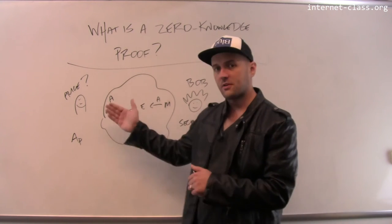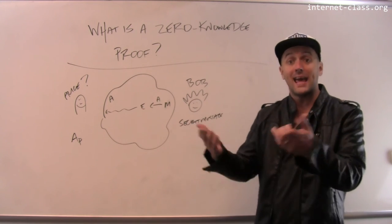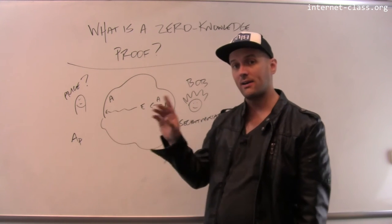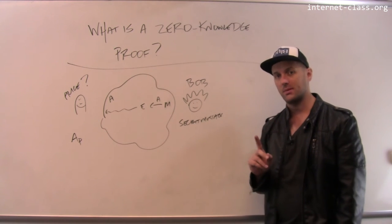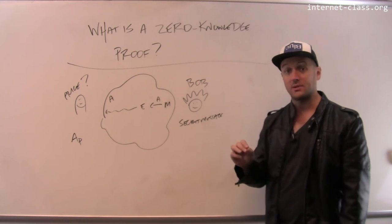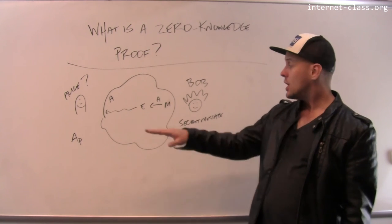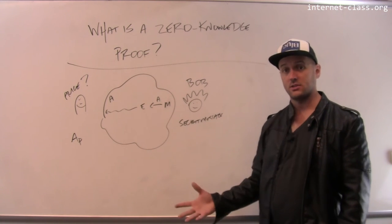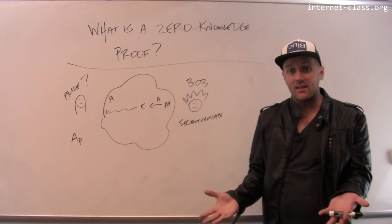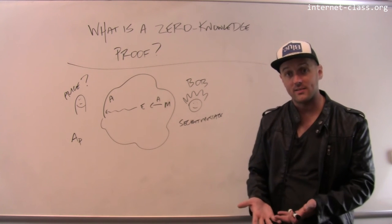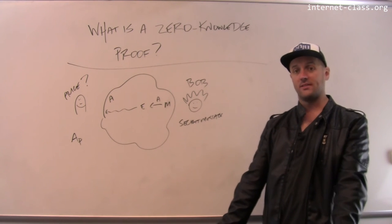So what could an imposter Alice do? So an imposter Alice, what would they have to do? Well, they can't decrypt the message without Alice's public key. That's really important to remember. Without the private key. So without the private key, nobody can decrypt this message. So an imposter Alice that doesn't actually have access to Alice's private key has no idea what this message says.